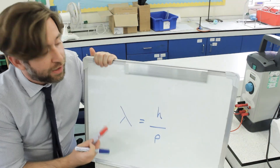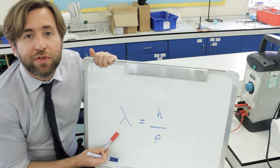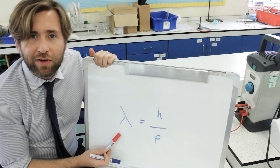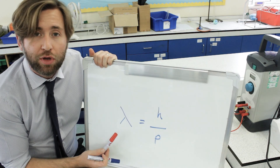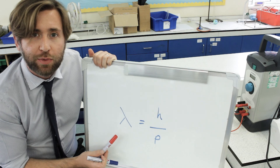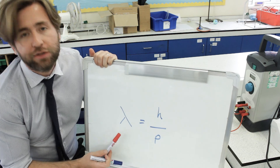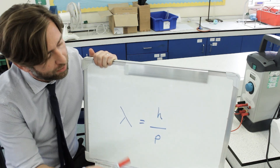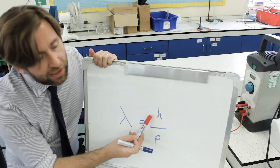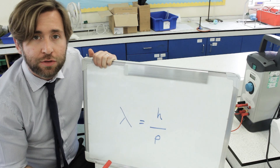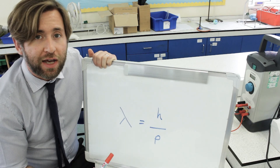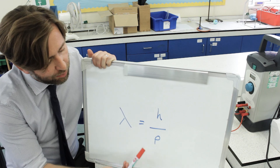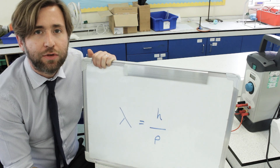So here's the de Broglie wavelength equation. Remember, in this case lambda doesn't mean wavelength — it means de Broglie wavelength, which is when a particle is exhibiting wave behaviour. H is Planck's constant, which you're always going to have in a data sheet in A-level physics. And P is the momentum of the electron.